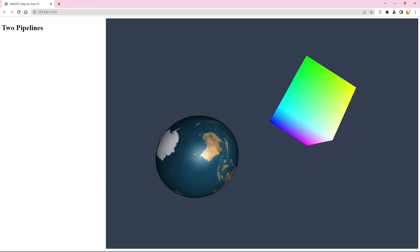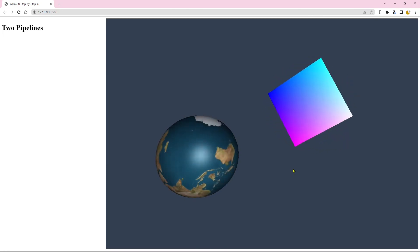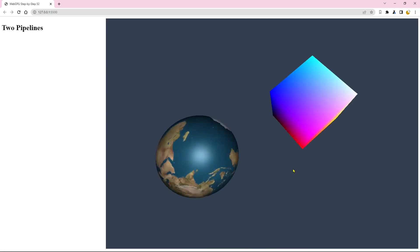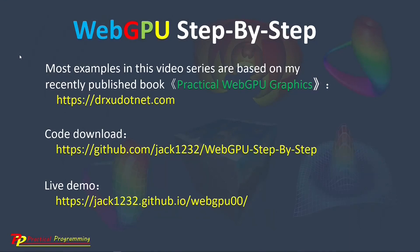We have completed this example. In the next video, we will discuss how to create a 3D surface with a mesh line on the surface using different pipelines. Most examples in this video series are based on my recently published book, Practical WebGPU Graphics. From the link drsu.net, you can see details about the book. I have also created a GitHub repository to host the source code and a live demo to show results from the example projects. I will end this video here. See you next time. Bye.